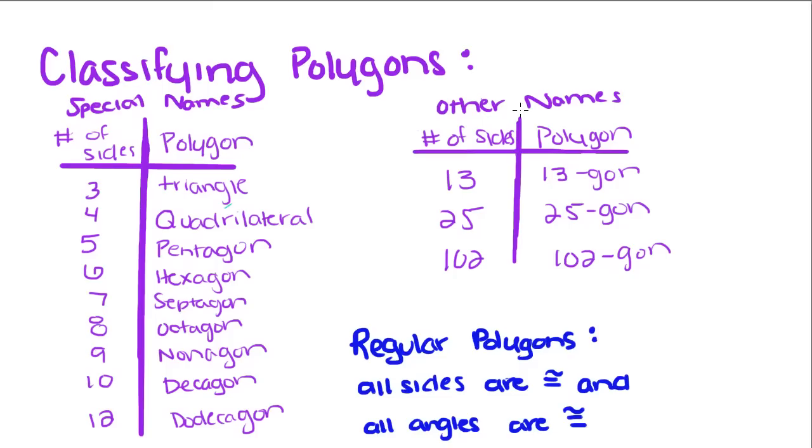Other polygons that don't have a special number of sides are just called, you put the number of sides they have and then put gon. An important thing to note is that if you have a regular polygon, it means that all sides are congruent and all angles of the polygon are also congruent.